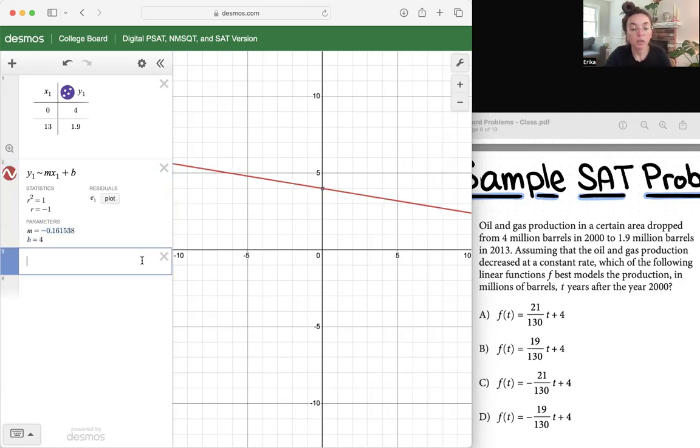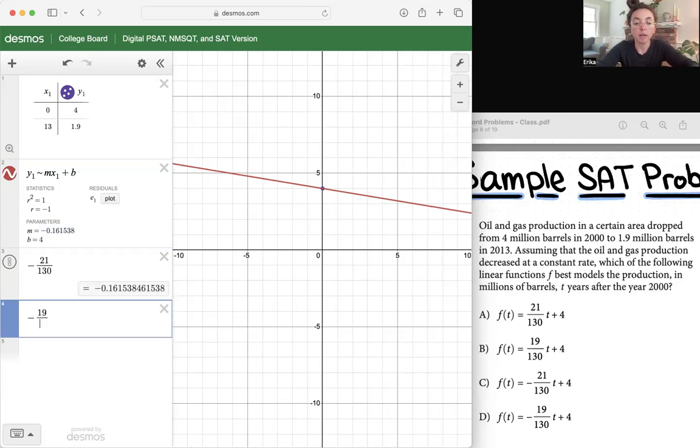So what we want here is the slope. And then we just do exactly what we did before, trying to figure out which one is the correct one. We know it's not going to be A or B because those are positive 19 divided by 130. So as you can see here, this is C negative 21 over 130. That is going to have the same slope as what they told us here in this function. And that's how you solve a problem like this in Desmos.